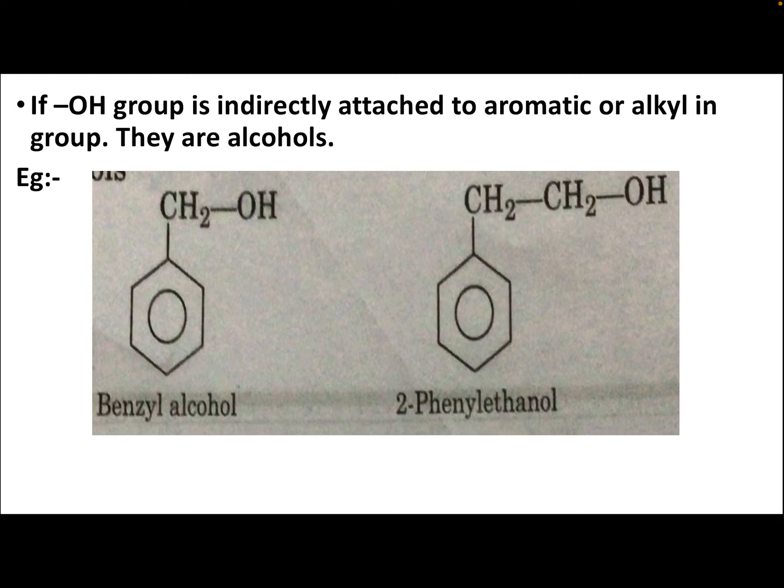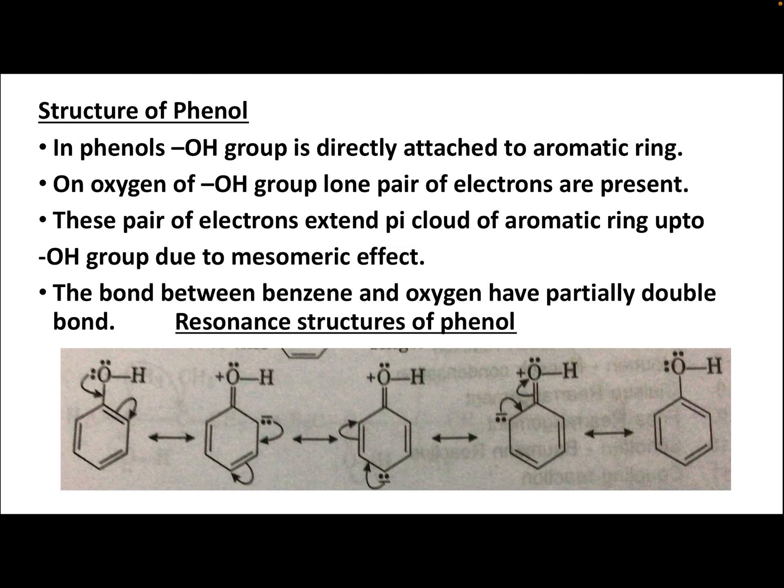If an OH group is indirectly attached to an aromatic ring via an alkyl group, then they are alcohols. For example, if benzene ring has CH2 then OH, the OH is not directly attached — there is a CH2 in between, so it is benzyl alcohol. If two CH2 groups are in between, it is 2-phenylethanol, where phenyl is attached to the second carbon from OH.